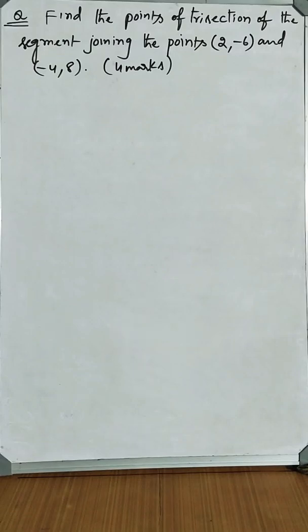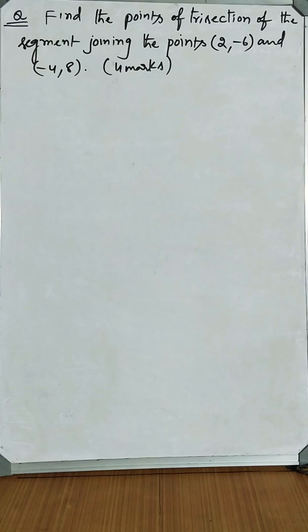Hi students, welcome to 1gmatch channel again. Now let us discuss a question from coordinate geometry, an important four marks question. The question is: find the points of trisection of the segment joining the points (2, -6) and (-4, 8).